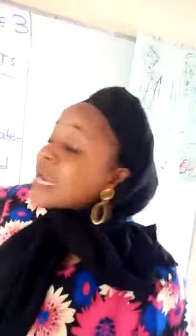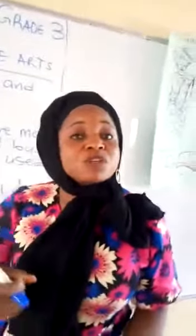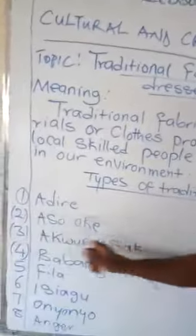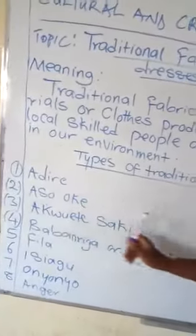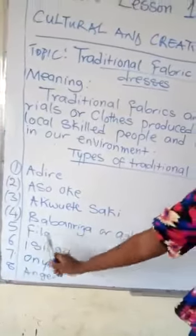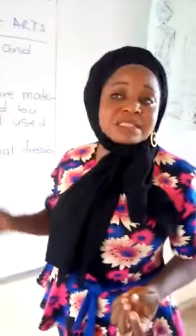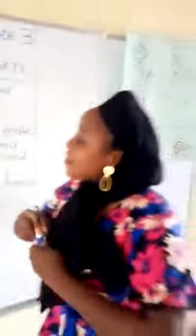This is all about traditional dresses and fabrics. To recap: traditional fabrics are materials or clothes produced by local skilled people and worn in their environment. The types are: one, adire; two, aso-oke; three, akwete; four, babariga or agbada; five, fila; six, isiagu; seven, onyono; and eight, ange.